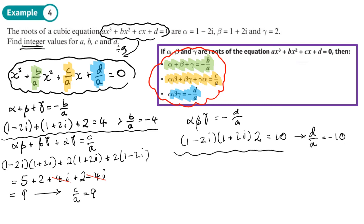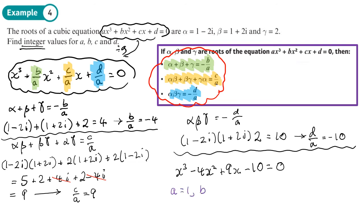Now we can write the cubic: x cubed plus (b over a)x squared plus (c over a)x plus (d over a) equals zero, which gives x cubed minus 4x squared plus 9x minus 10 equals zero. In this case we didn't need to multiply back up — they're already integers. So: a equals 1 (coefficient of x cubed), b equals negative 4 (coefficient of x squared), c equals 9, and d equals negative 10.